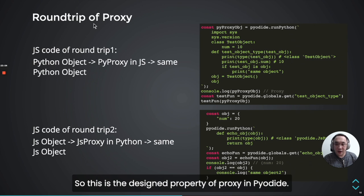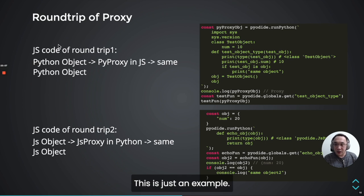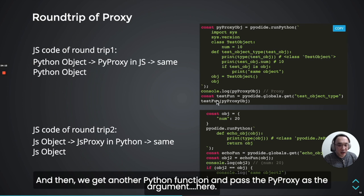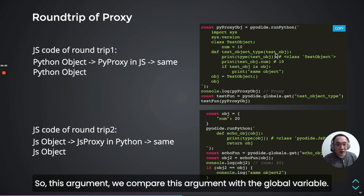This is a design property of PyProxy in Python. In this example, in JavaScript we execute a Python script to get a Python object as a PyProxy. Then we get another Python function and pass the PyProxy as the argument. So this argument is compared as the global variable — meaning it's a round trip using the same memory address, avoiding memory allocation issues.